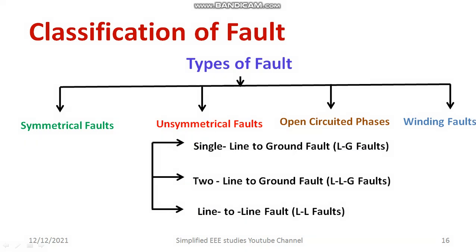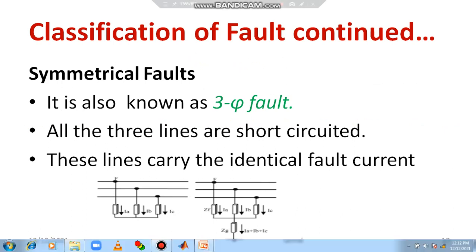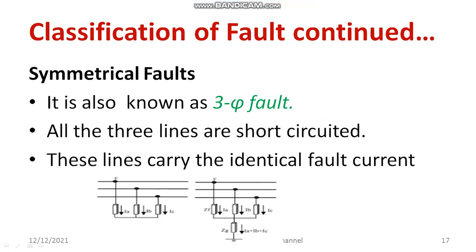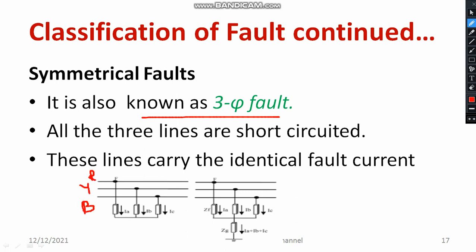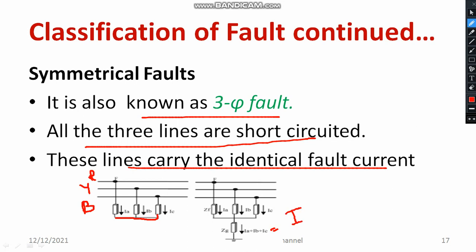Let me discuss the meaning of symmetrical fault. You know the word meaning of symmetry — suppose there is a box; if you cut it in a particular plane it should be divided equally. In case of symmetrical fault, it is also known as three phase fault, applicable for the three phase system. Consider a three phase system with R, Y, and B lines — the three lines are short circuited. Thereby equal current flows through each line, and the fault currents are divided equally. The total fault current is IA plus IB plus IC, and the magnitude is very high. Among all types of fault, symmetrical fault carries the highest magnitude of fault current.